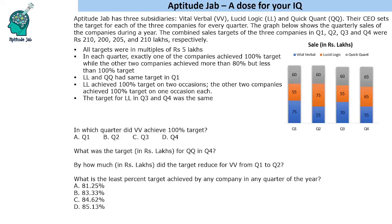Hello everyone, welcome to AptitudeJab. This is a set based on a stacked bar graph. AptitudeJab has three subsidiaries: Vital Verbal, LucidLogic, and QuickQuant. Their CEO sets the target for each of the three companies for every quarter. The graph shows the quarterly sales of the companies during a year in lakh rupees, and the combined sales target of the three companies in the four quarters are given.